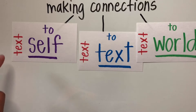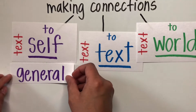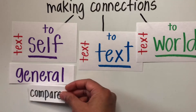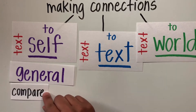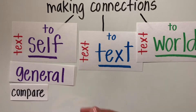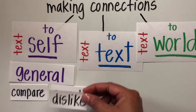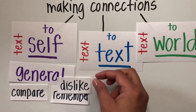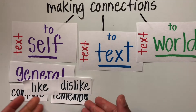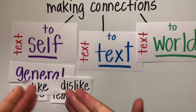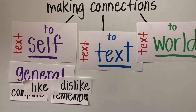Using the text to make connections to yourself is more general. You can compare the story or the text to something that you remember that you probably liked or disliked. For example, the character could be eating a meal in the story and you remember a time you ate that same meal and didn't like it.